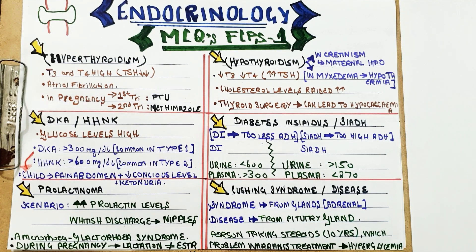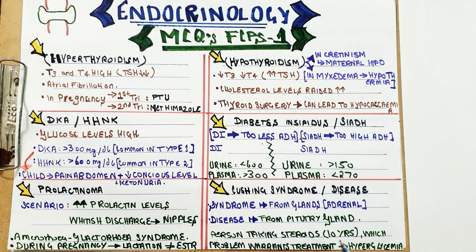An MCQ from the July 2020 paper: a person taking steroids for 10 years — which problem warrants treatment? Options included moon face, buffalo hump, and other Cushing's features. The specific feature requiring treatment is hyperglycemia. You should not click moon face, buffalo hump, hirsutism, or skin changes — click hyperglycemia.